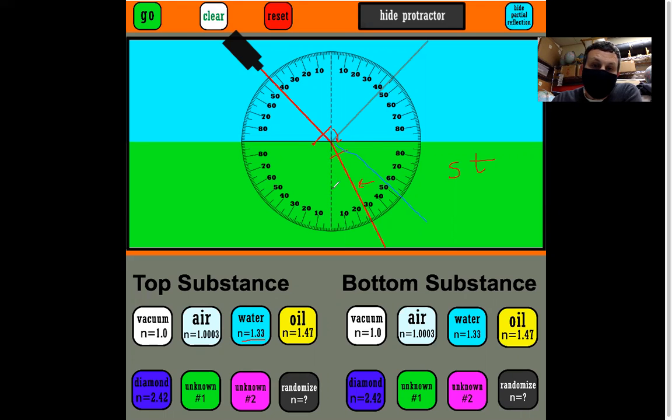So this must be a thicker medium than water. Water's n value is 1.33, so in this case, unknown number 1 must be thicker, and its n value must be greater than 1.33.